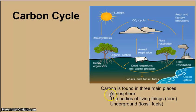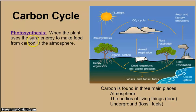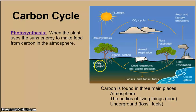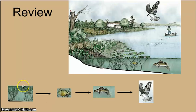Let's focus first on the atmosphere and the bodies of living things. Carbon enters the bodies of living things with energy — it happens at the same time. During a process called photosynthesis — underline or highlight that — the plant uses the sun's energy to make food from carbon in the atmosphere. That carbon from the atmosphere goes into plants and is turned into plant material using the sun's energy, making food. This takes carbon from the atmosphere and puts it into the bodies of living things, and once there it gets passed down the food chain.